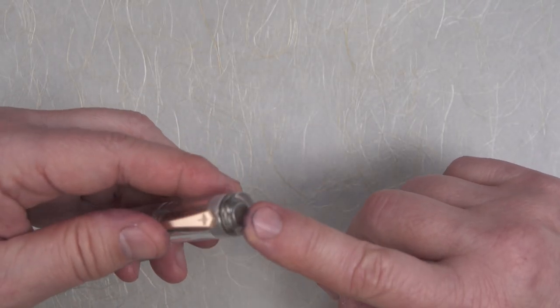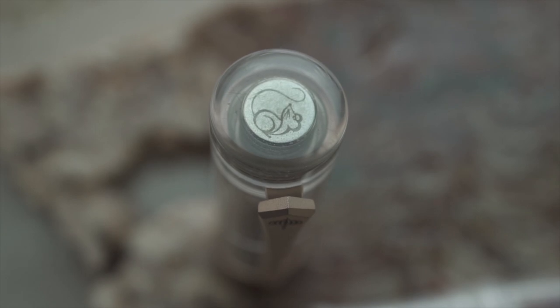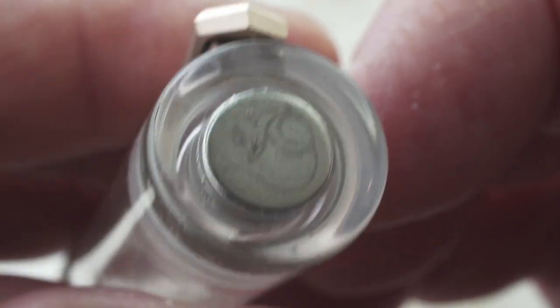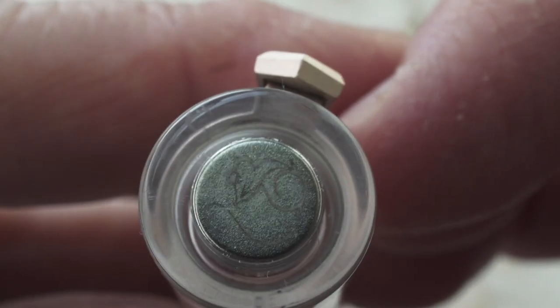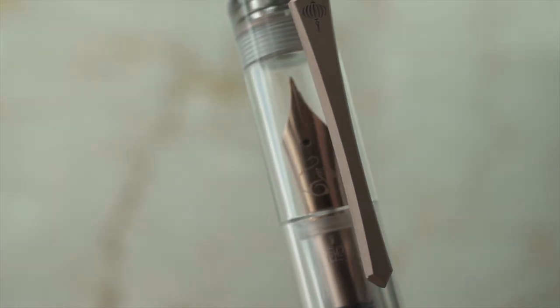Inlaid in the top of the cap is a magnet. It also has the same picture of the rat. The clip is kind of sword shaped and has a lantern imprint on the top.